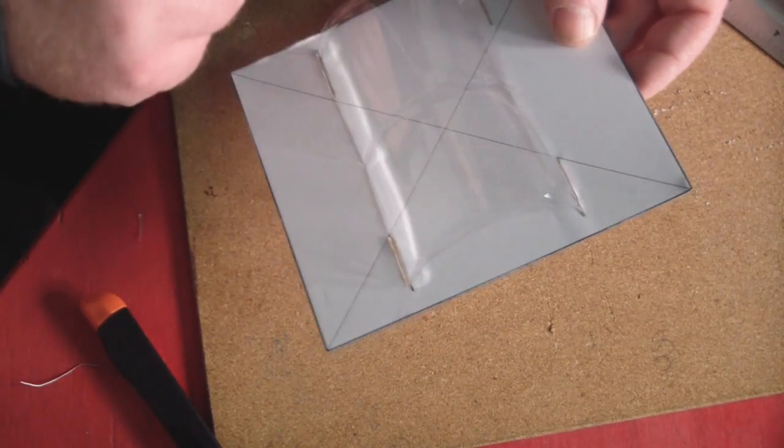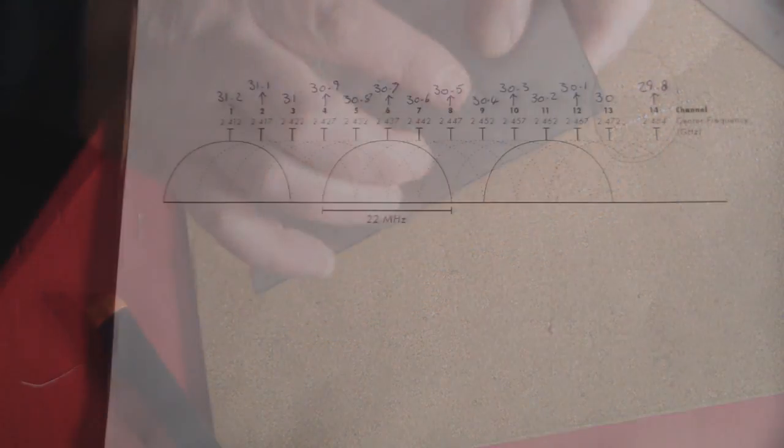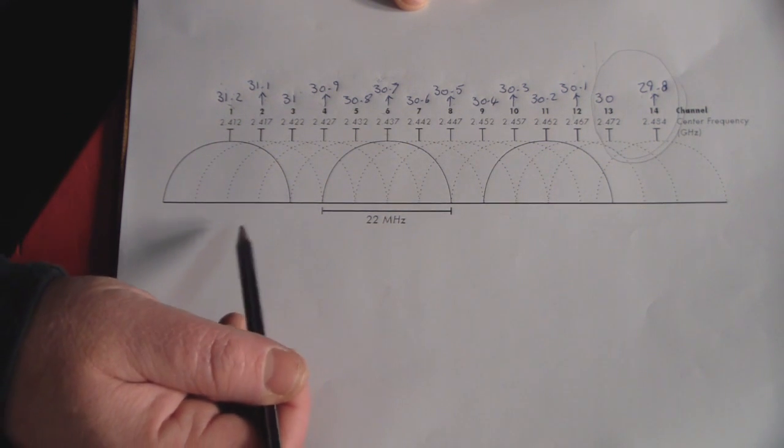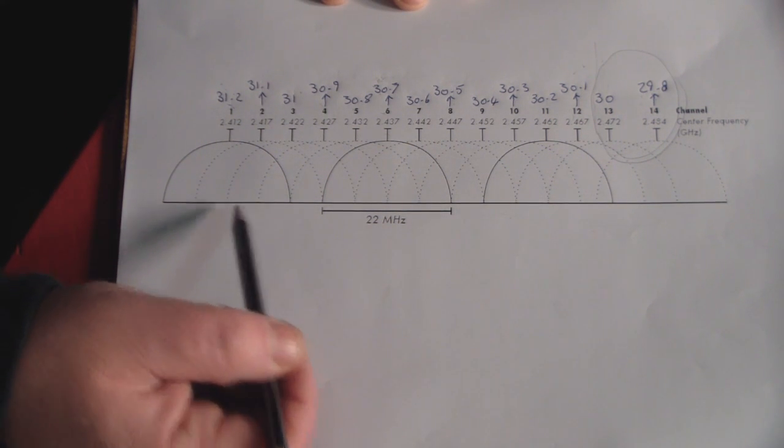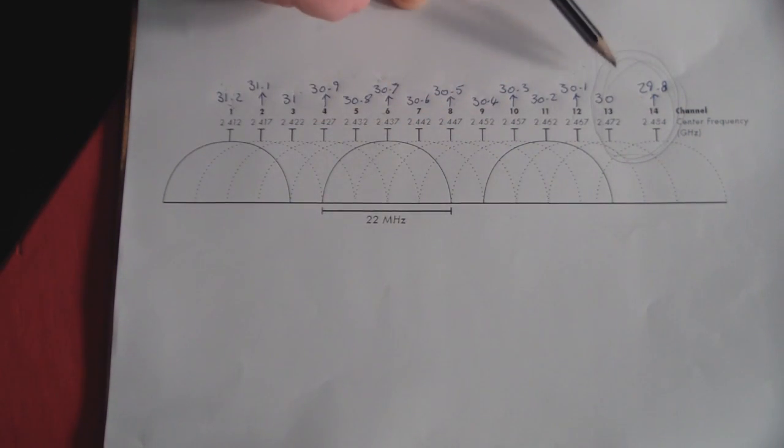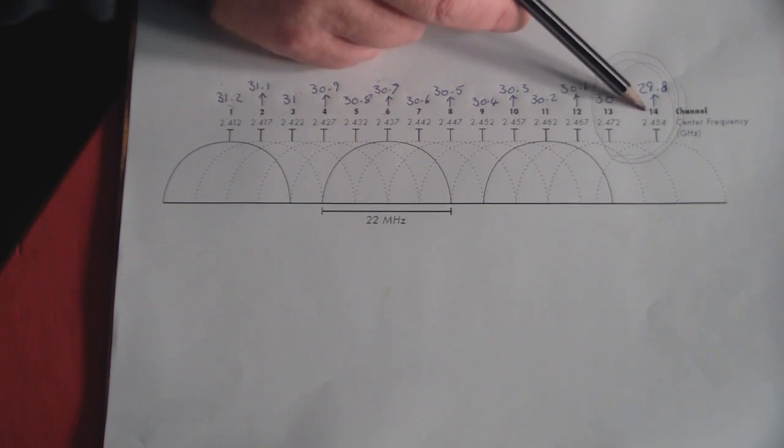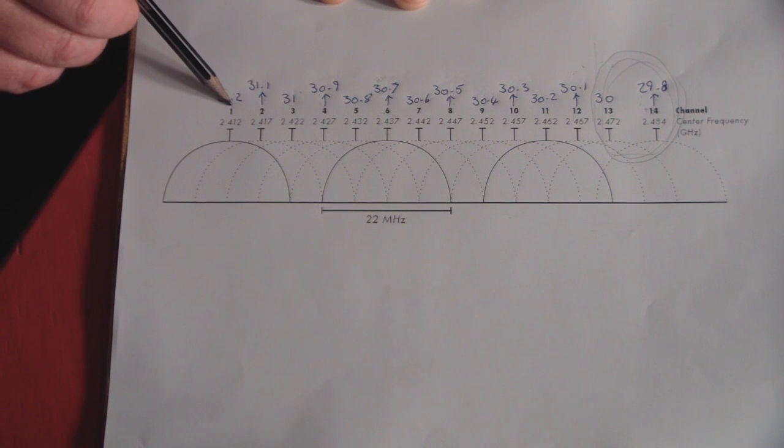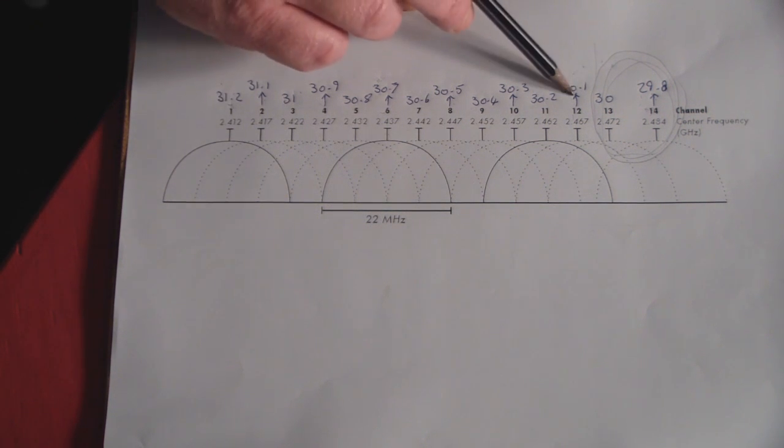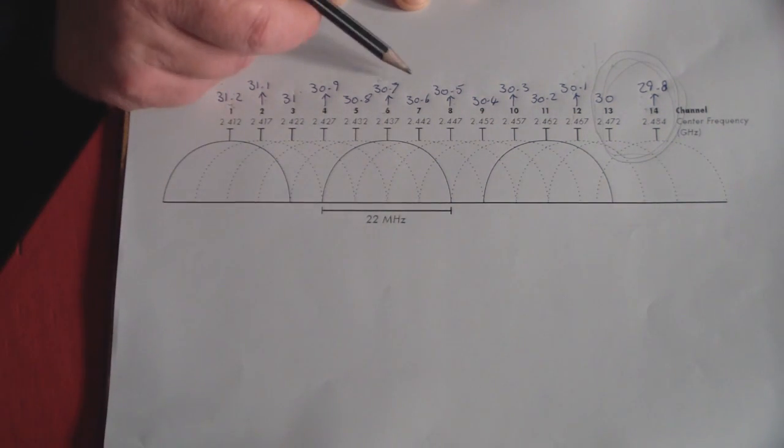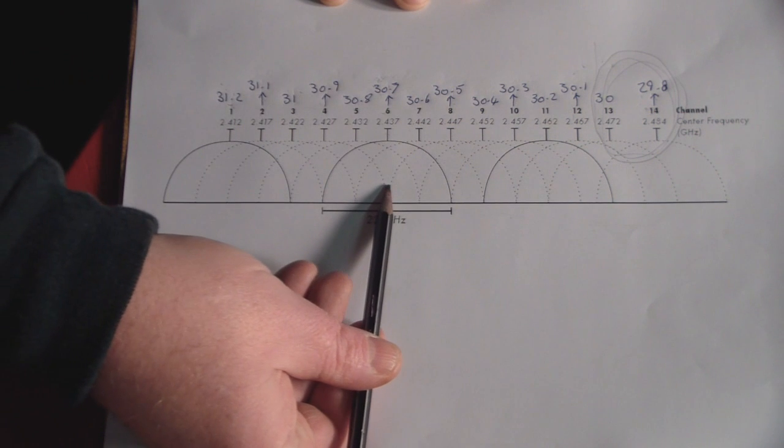Before we start building the driven element for the bi-quad antenna, I thought it would be useful to have a look at the 2.4GHz spectrum itself. This is the spectrum here. We've got channels 1 through to 14, although 13 and 14 we don't use in the UK. 14, I think you're allowed to use that in Japan. But concentrating on channels 1 through to 12, when I build a driven element for any antenna, I normally concentrate on channel 6, which puts me in the middle of the spectrum.